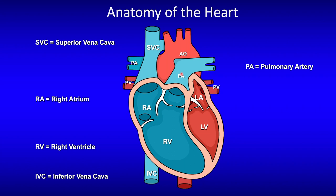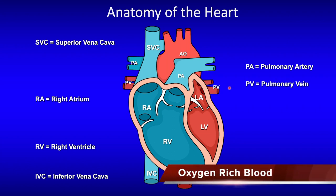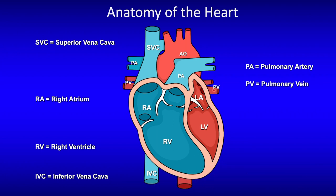From the Lungs, the Blood returns via the Pulmonary Vein and enters the Left Atrium. From the Left Atrium, the Atria contracts and Blood gets pushed through the Mitral Valve into the Left Ventricle.